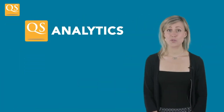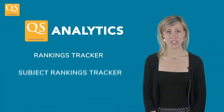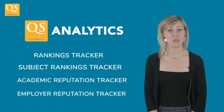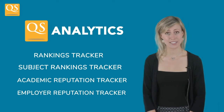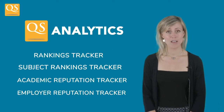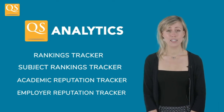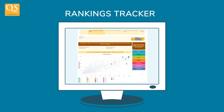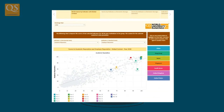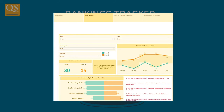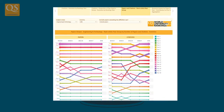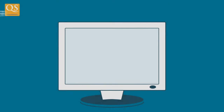QS analytics comprises four datasets designed to help you understand your performance in the different rankings indicators. Firstly, the rankings tracker, which provides bespoke comparative data regarding your institution's rankings results relative to at least 15 peers, enabling you to identify why you rank in the position that you do.